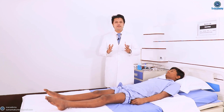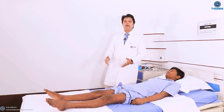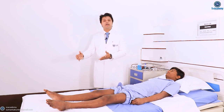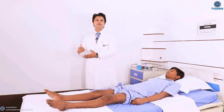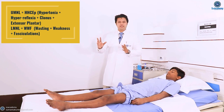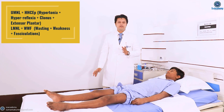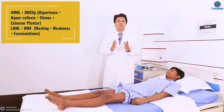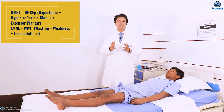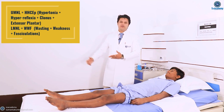For this young boy with Friedreich's ataxia, we must demonstrate upper motor neuron lesions and lower motor neuron lesions, plus dorsal column involvement. For upper motor neuron lesions, the bundle is HSCE: hypotonia, hyperreflexia, clonus, and extensor plantar — with extensor plantar being the pathognomonic feature. For lower motor neuron lesions, the key features are weakness, wasting, and fasciculation — the WWF — with wasting being the most important.